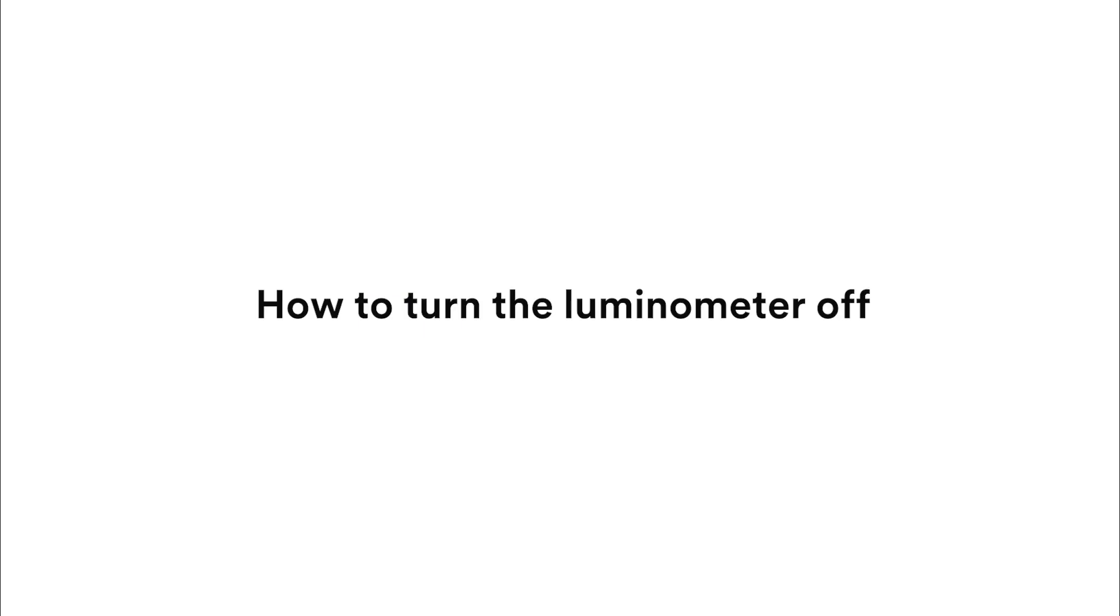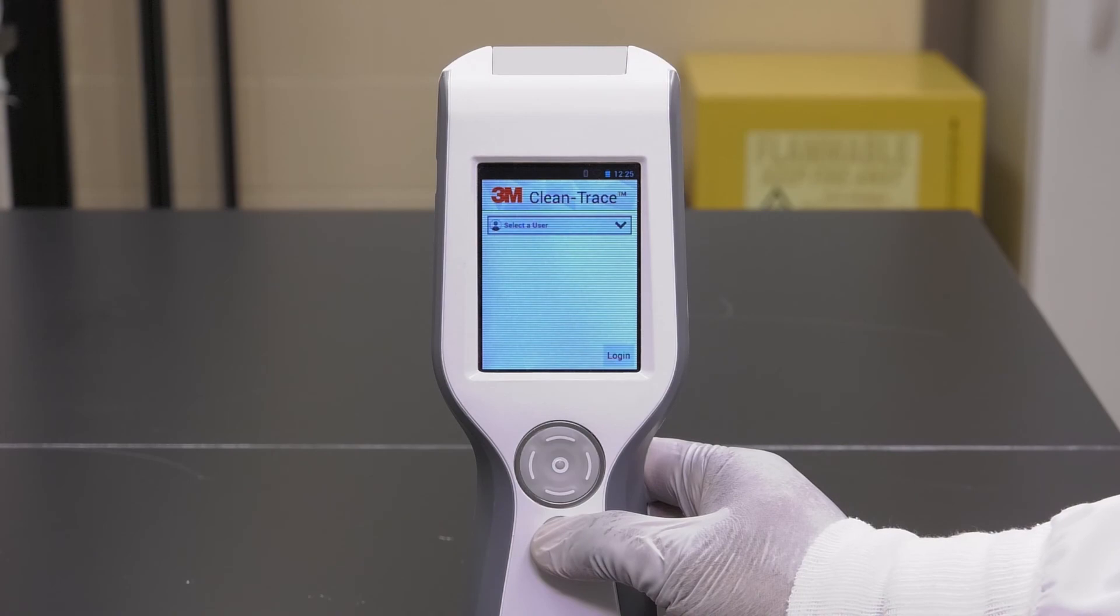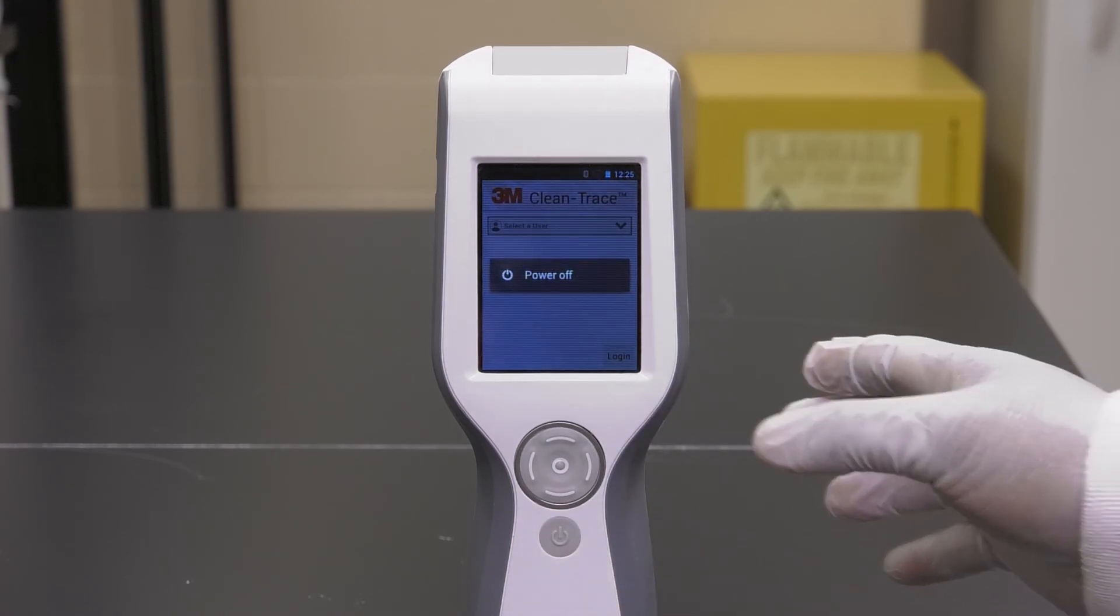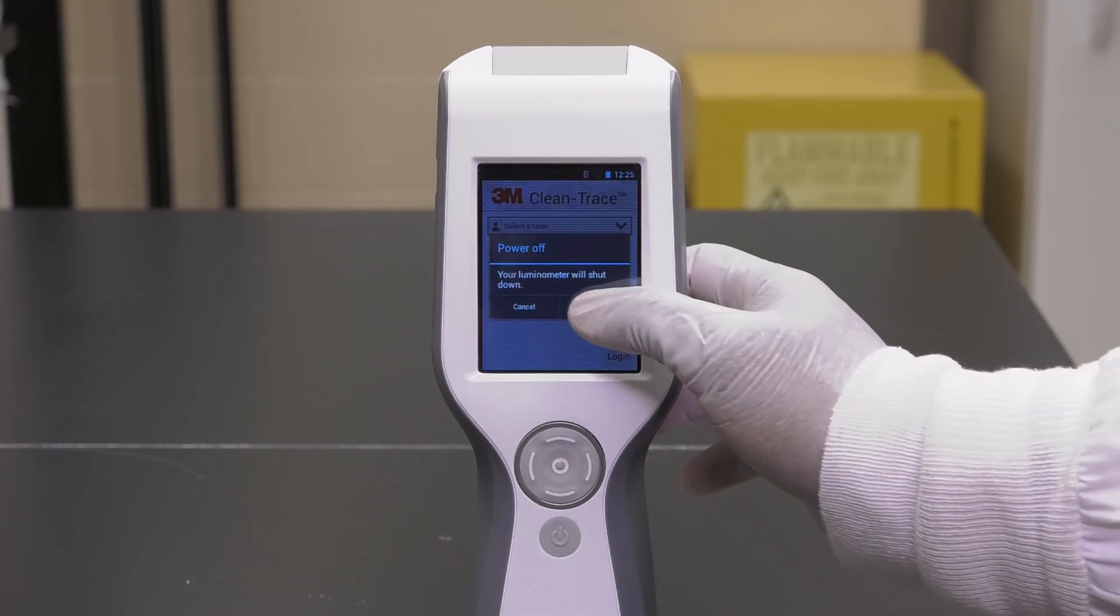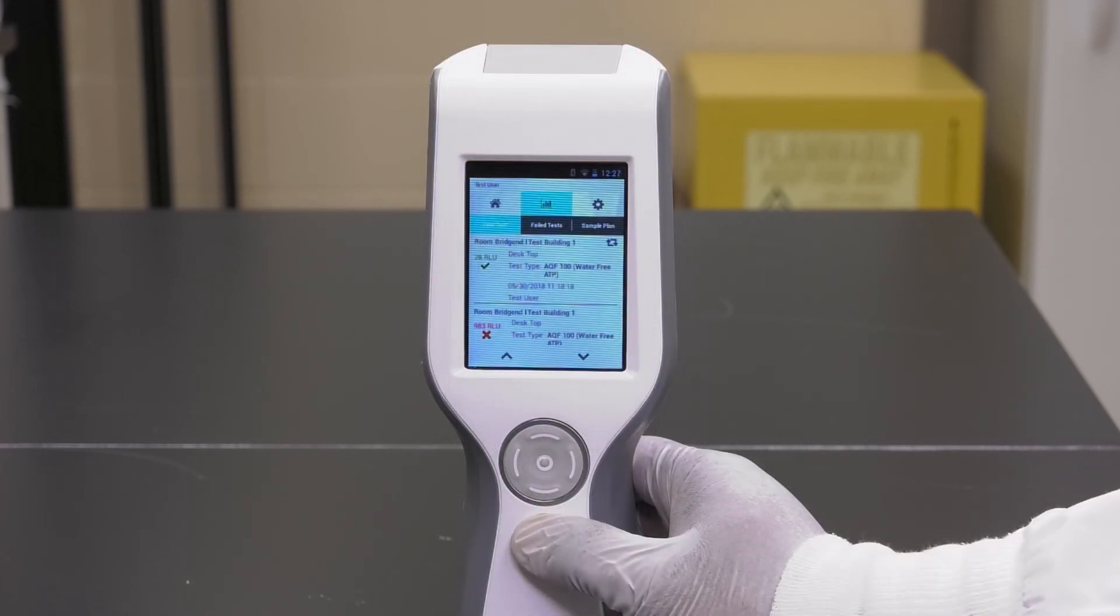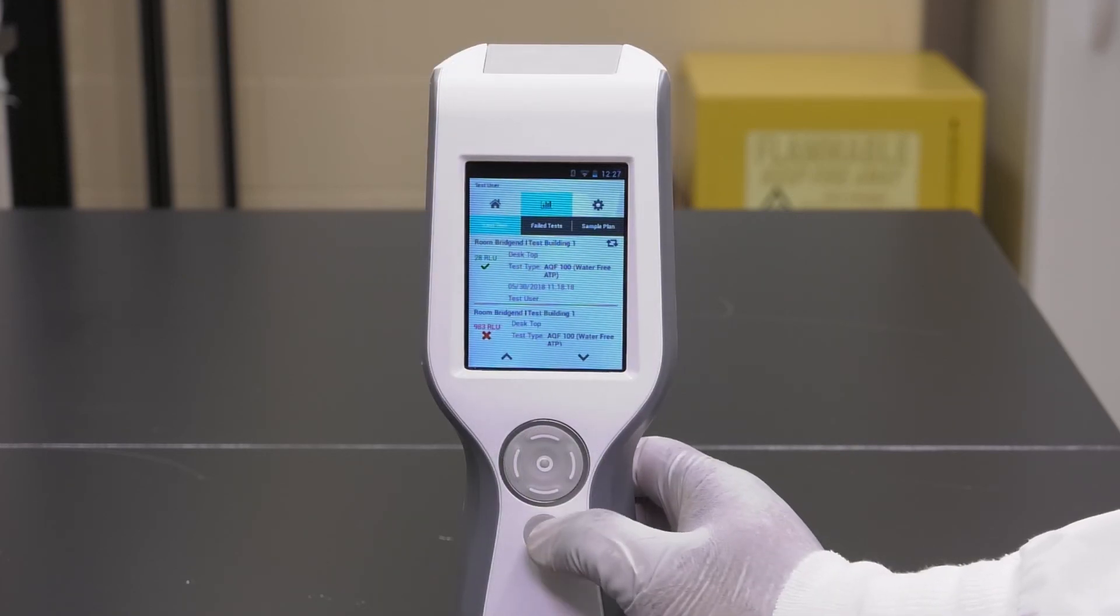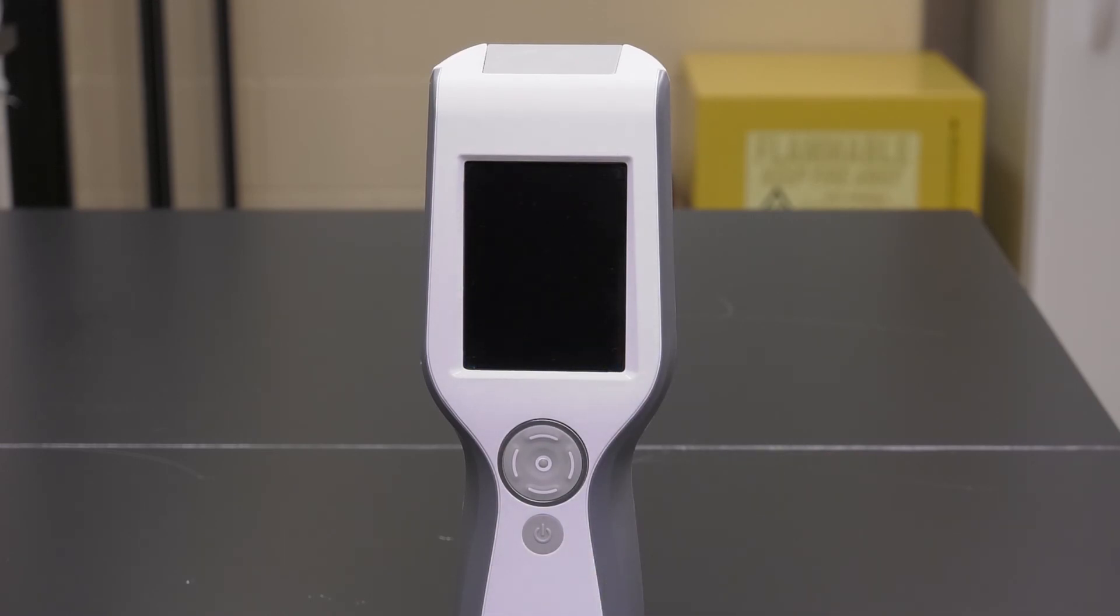To turn the luminometer off, press and hold the on off button for about three seconds. A power off bar will appear. A second bar will appear asking if you want to turn it off. Press OK. To put the luminometer to sleep, press and release the same power off button quickly, about one second. The screen will go black. To wake it up, press and hold the top cursor button for about three seconds.